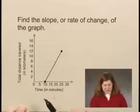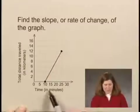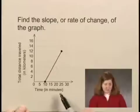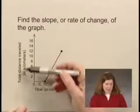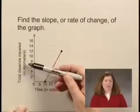So let's look at the units that are labeled. The horizontal axis is labeled in time, minutes, and the vertical axis is labeled in distance, in kilometers.